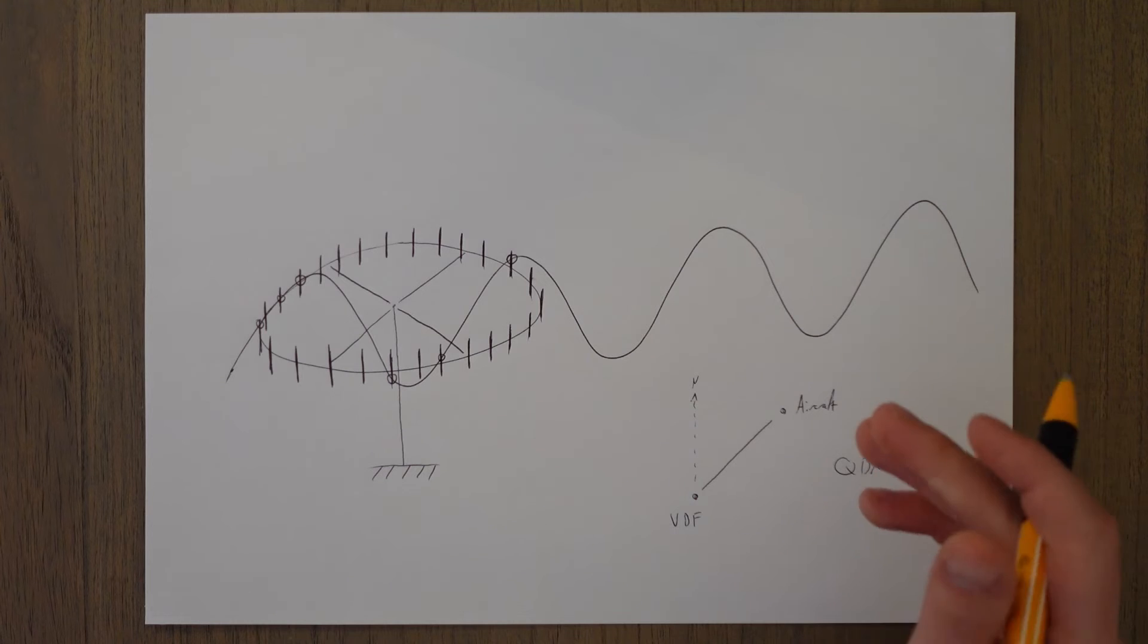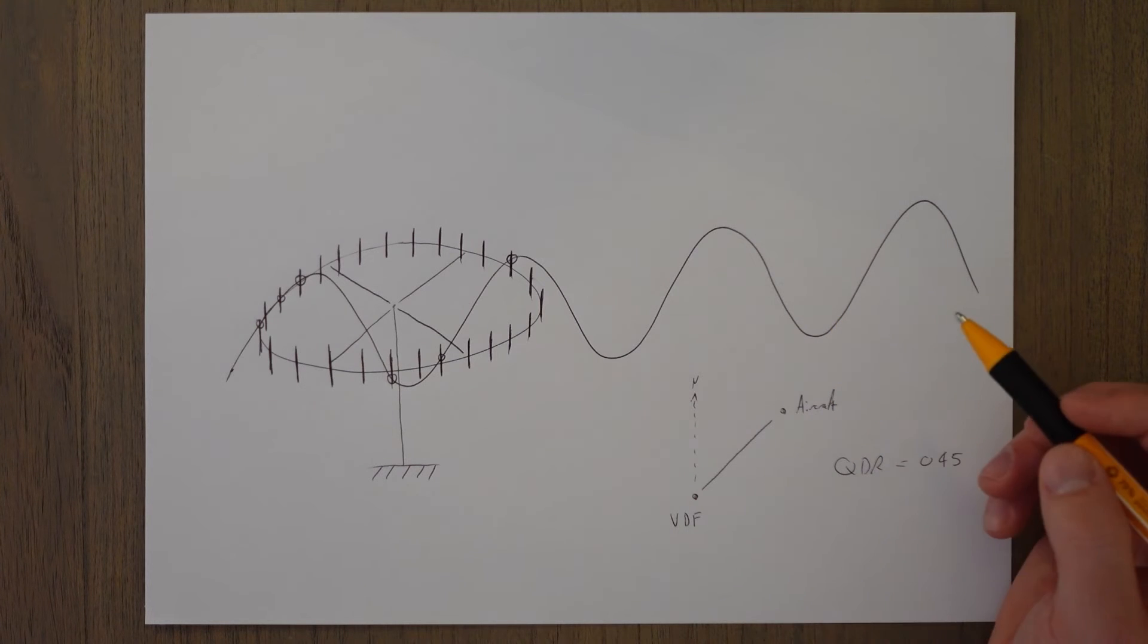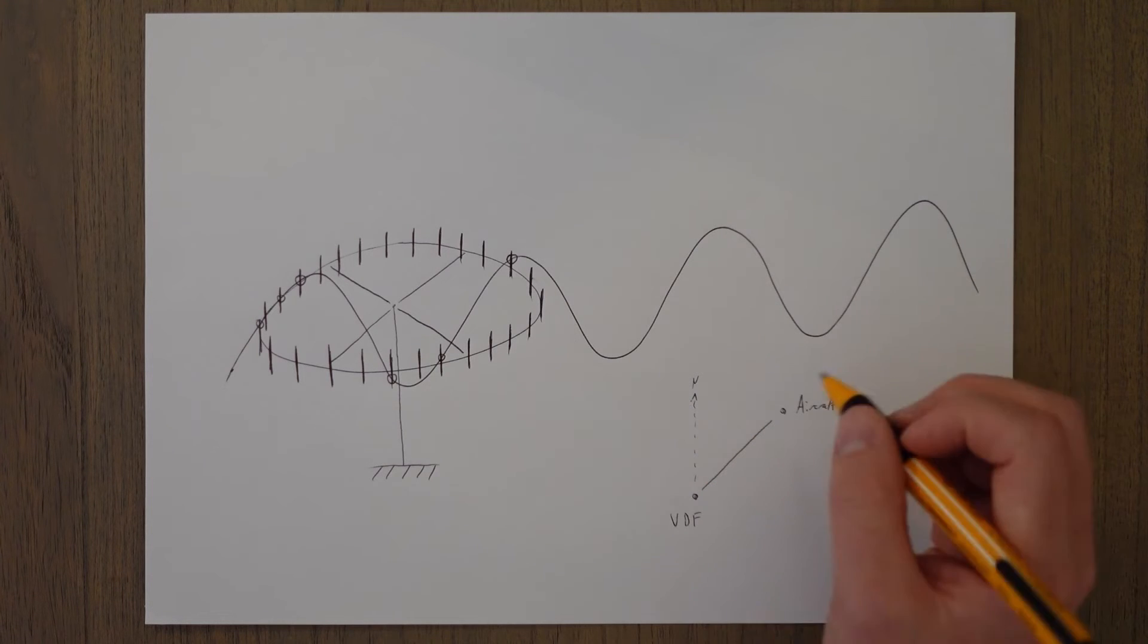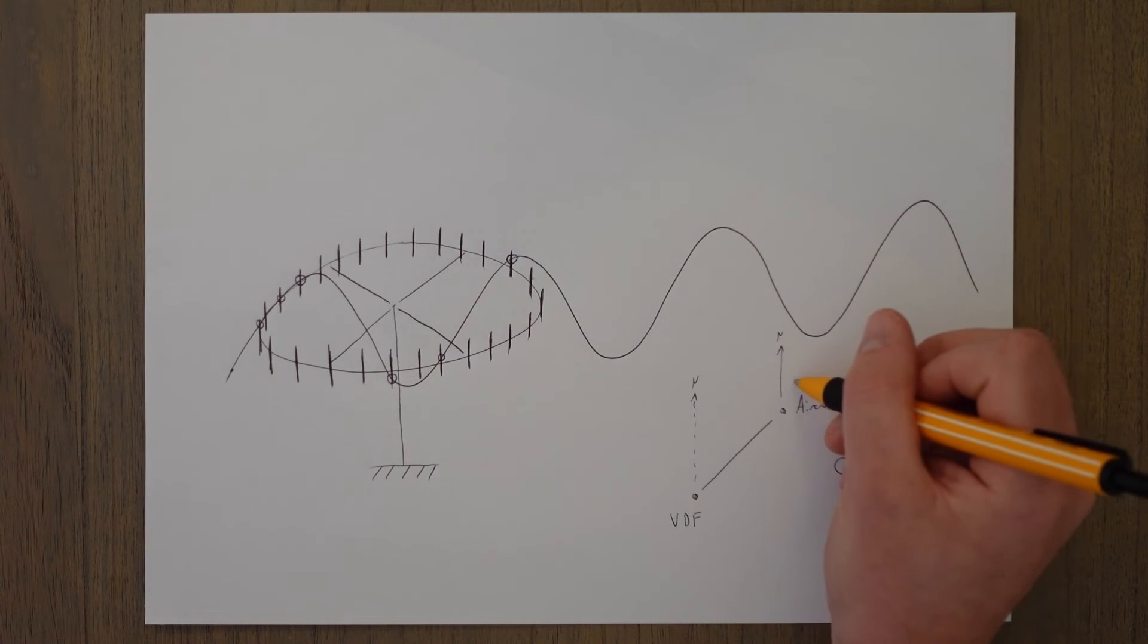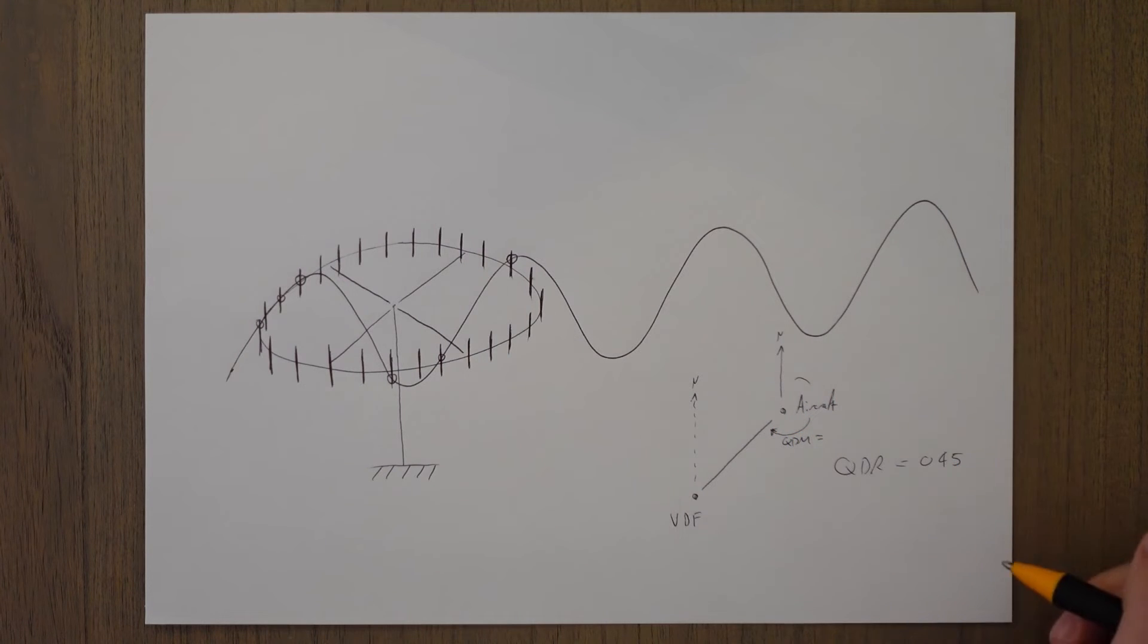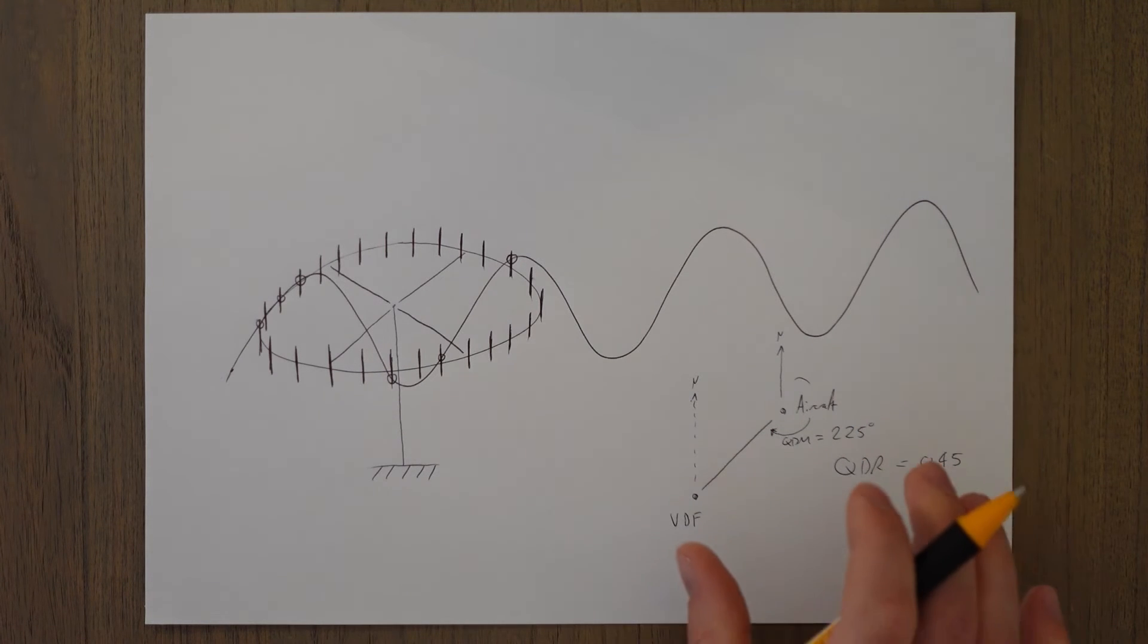The QDM is the reverse of this. It's the magnetic bearing to the station from the aircraft, and it should always be 180 degrees off the QDR. So in this case, if we took north of the aircraft here, our QDM is this angle in here, and it's going to be the reciprocal of 045, which is 225 degrees. And again, this is going to be magnetic.